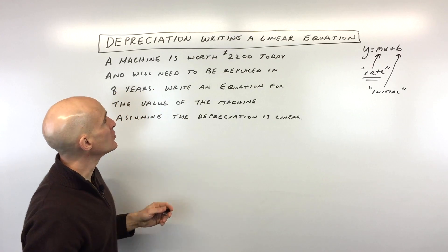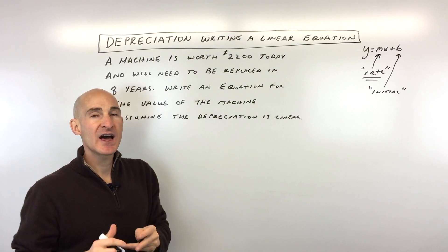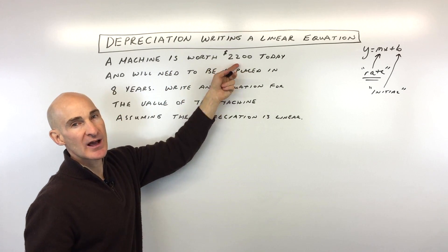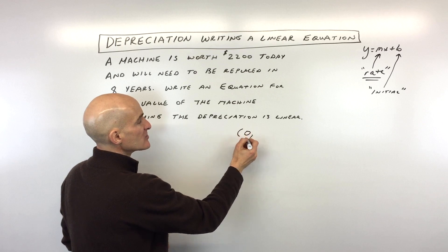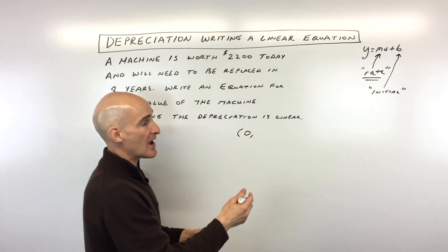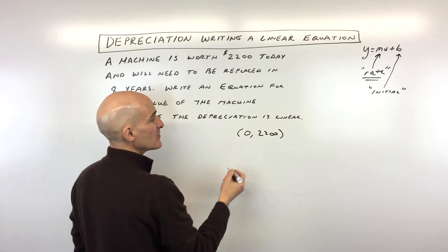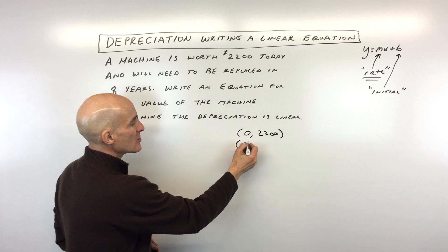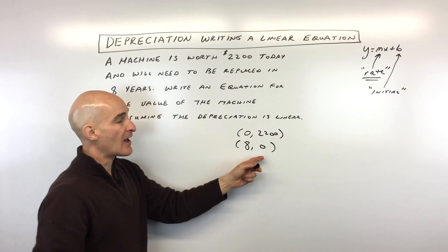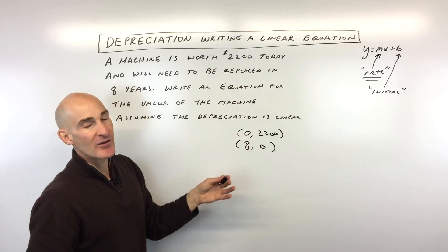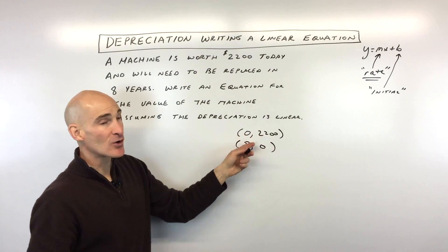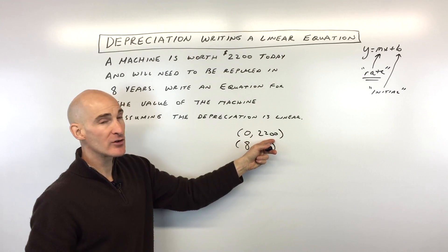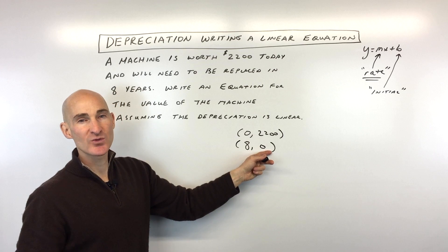In this particular problem, I would coordinate these data points. The machine is worth $2,200 today, meaning that at year zero — zero time has passed — the value is $2,200. Then since it needs to be replaced in eight years, that means in eight years the value is zero. So at year zero it's worth $2,200, and after eight years it's worth nothing.